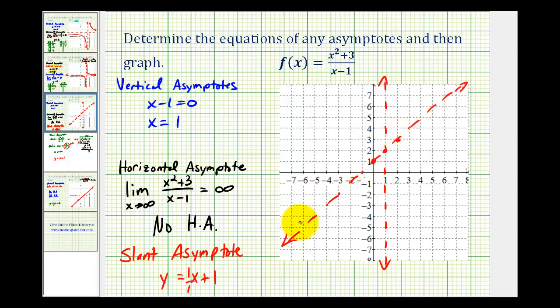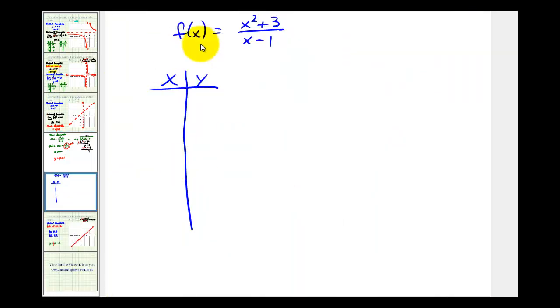Now we need to find some additional points on our graph by completing a t-table. We want to pick some convenient values for x. Let's try x equals zero. If x is zero, our numerator would be three, our denominator would be negative one, so y would be negative three. This would actually be our y intercept. Let's try x equals two. If x is two, we'd have two squared plus three, that's seven all over one, so that's seven. Let's go back and plot these two points on our function.